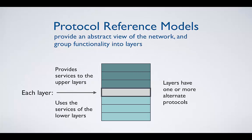The OSI model is a protocol reference model, and that means it gives an abstract view of the network. It groups network functionality into layers, starting with the physical connection medium at the bottom, like Ethernet cables, and ending with the software application layer at the top. Each layer is going to provide services to the layers above it, and each layer is going to use the services of the layers below it. And each of these layers is going to have its own set of protocols it uses to make the network operate.